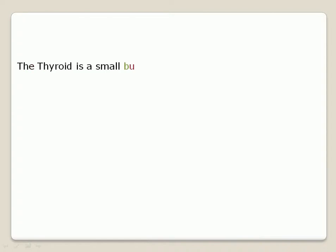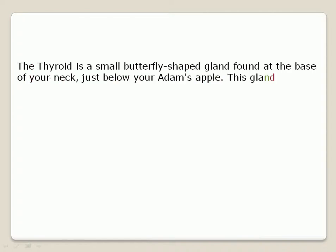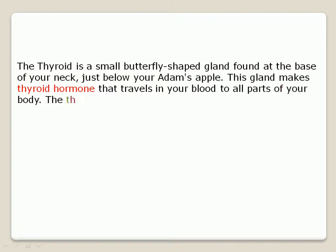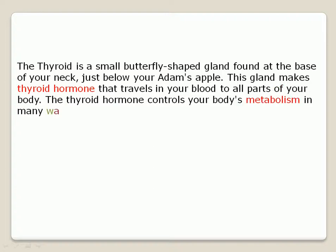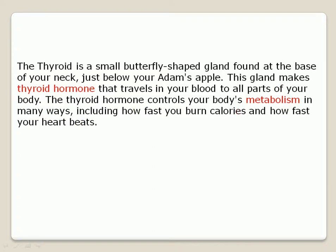What is the thyroid? The thyroid is a small butterfly-shaped gland found at the base of your neck, just below your Adam's apple. This gland makes thyroid hormone that travels in your blood to all parts of your body. The thyroid hormone controls your body's metabolism in many ways, including how fast you burn calories and how fast your heart beats.